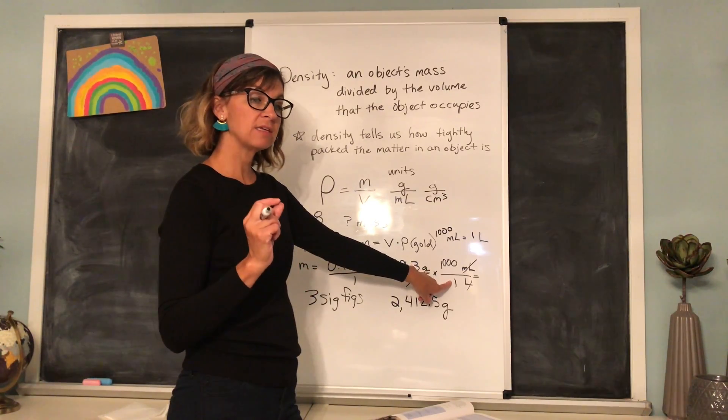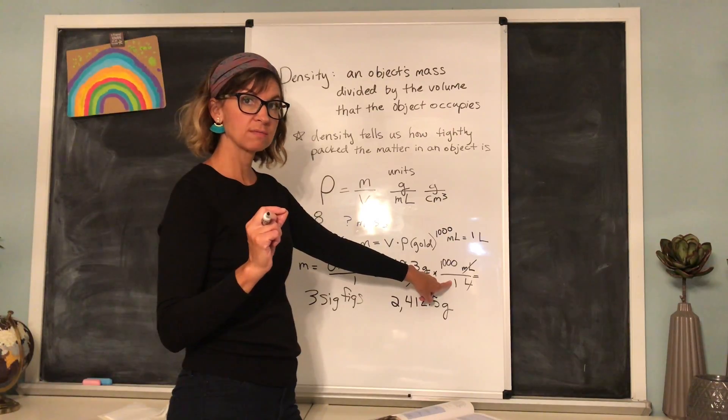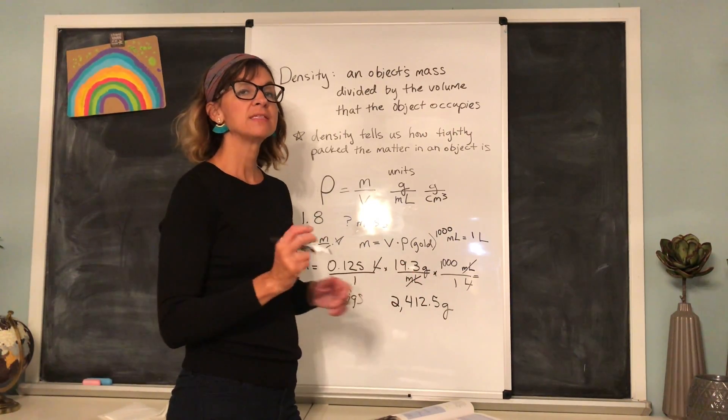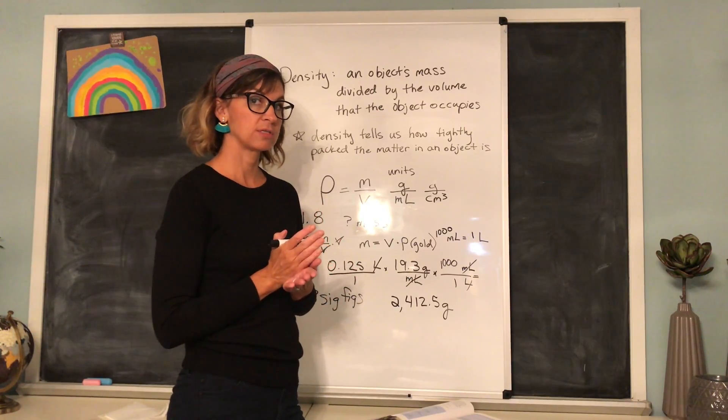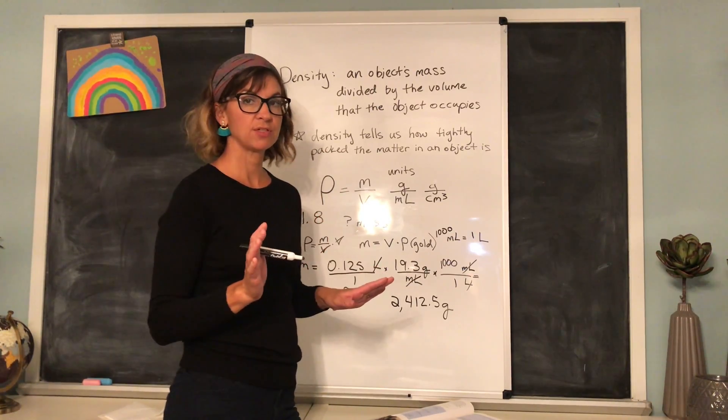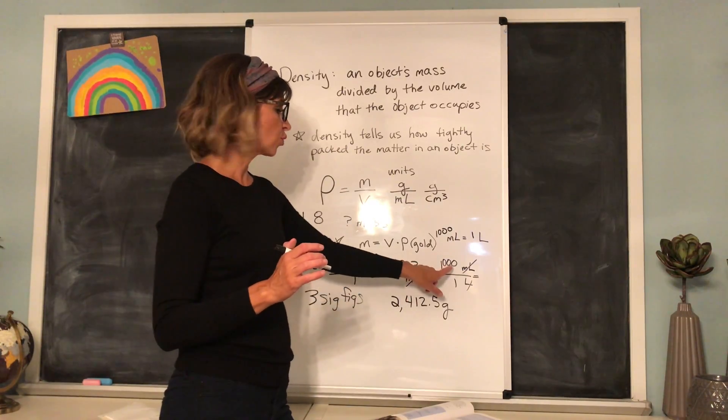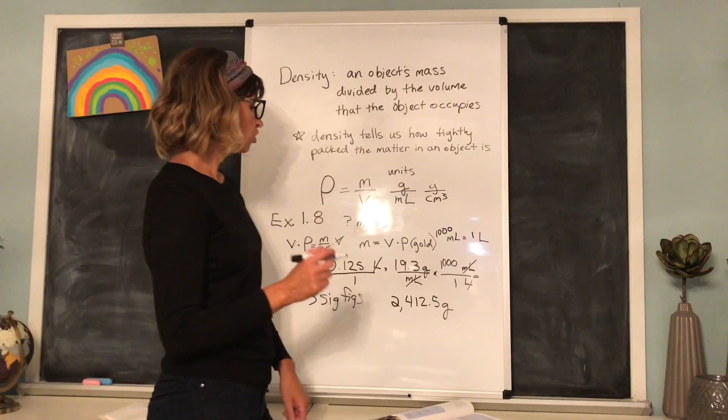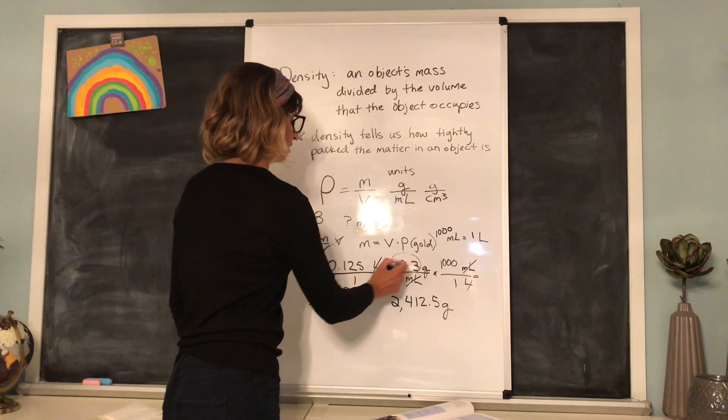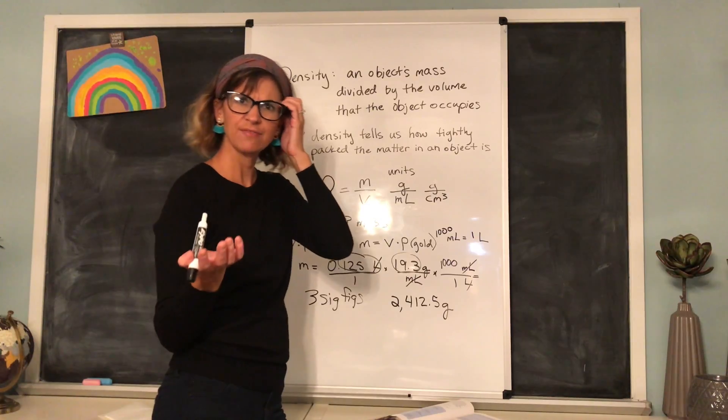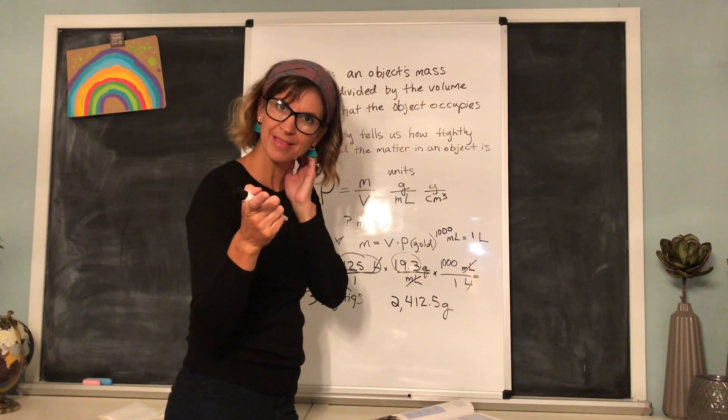Well, what about this one here? 1,000 milliliters over 1 liter. When we're using these ratios in the metric system, these are precise numbers. So we don't have to count these up at all when we're talking about sig figs. Don't worry about the 1,000 or the 1 for sig figs. You're just looking at the values of the other numbers that you were given in the problem. I hope that makes sense. If it doesn't, read your book. They explain it there too.